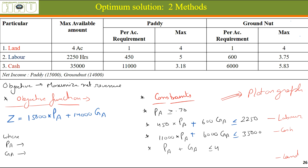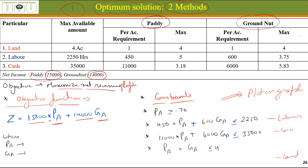Finding an optimal solution has two methods: one is a tabular method and another is a graphical method. There are also two types of graphical methods. For our example, we have two options: paddy and groundnut. One acre of paddy gives 15,000 rupees net income after deducting expenses, and one acre of groundnut gives 14,000 rupees of income.